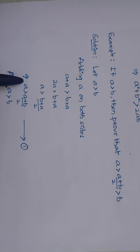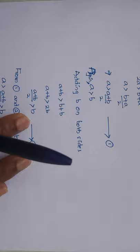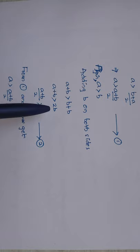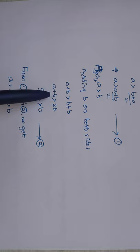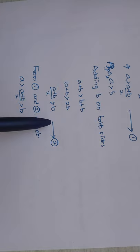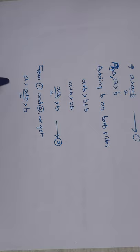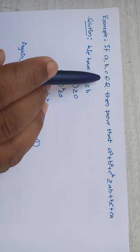Again, taking a > b, adding b on both sides, we get a + b > b + b = 2b, so a + b > 2b. After dividing by 2 on both sides, we get (a+b)/2 > b. I take this as equation number 2. From equations 1 and 2, we get a > (a+b)/2 > b. This is the solution.